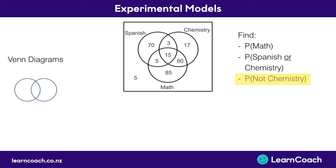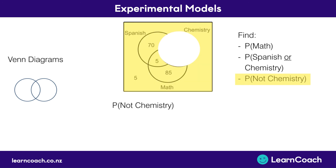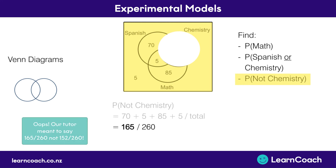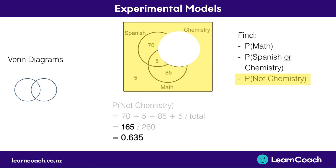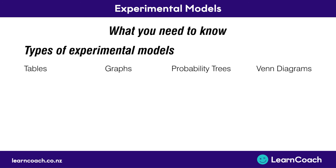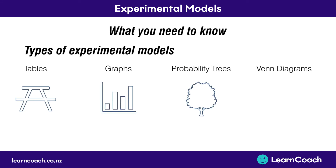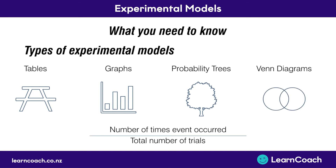Now for the probability of not taking chemistry, we cancel out that circle and add all the remaining numbers, dividing by the total: 70 plus 5 plus 85 plus 5, divided by 260, which equals 152 divided by 260, giving us 0.584. So all you need to know for this standard is that there are four types of experimental models: tables, graphs, probability trees, and Venn diagrams.